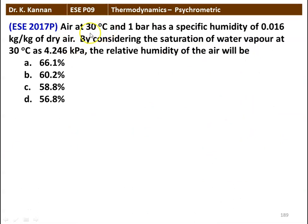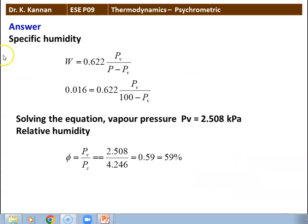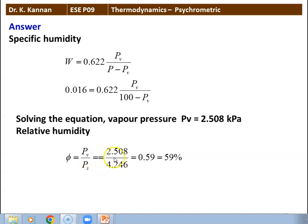Next question: air at 30°C and 1 bar has a specific humidity of 0.016 kg/kg of dry air. Given saturation pressure of water vapor at 30°C as 4.246 kPa, find the relative humidity. Using W = 0.622 × PV / (P − PV), substituting 0.016 = 0.622 × PV / (100 − PV), we get vapor pressure PV = 2.508 kPa. Relative humidity = PV / PS = 2.508 / 4.246 ≈ 0.59, which is 59% (approximately 58.8%). The correct answer is 58.8%.